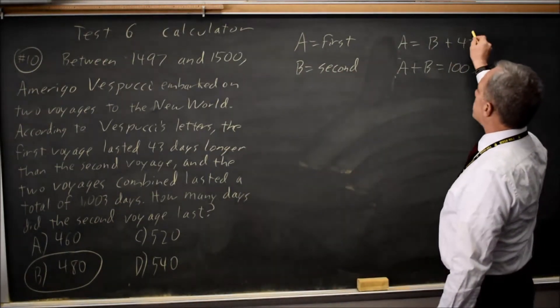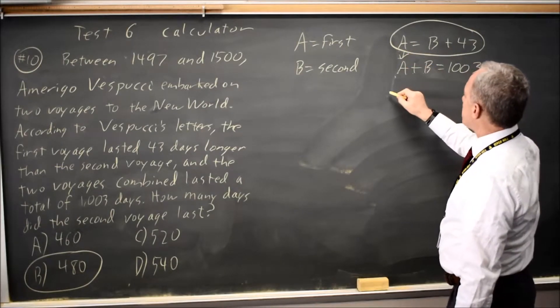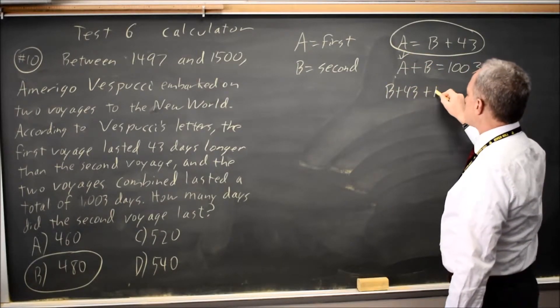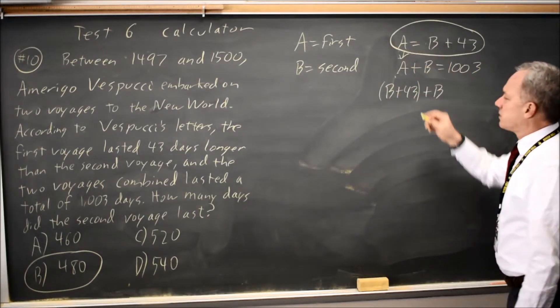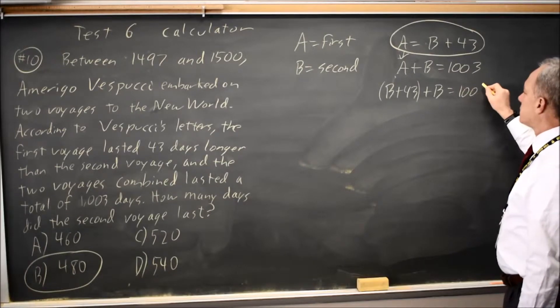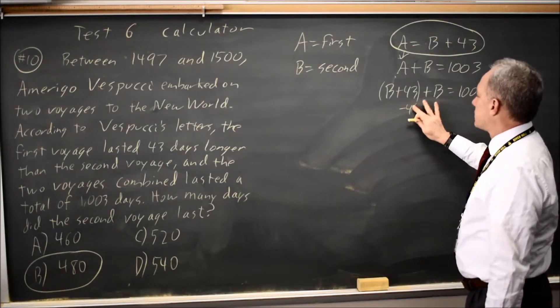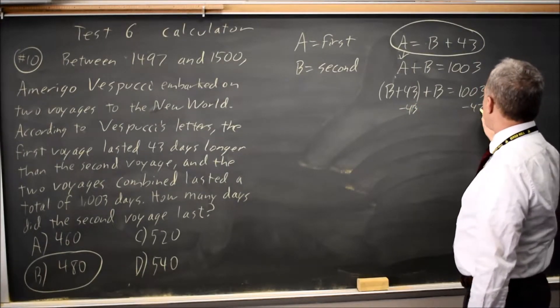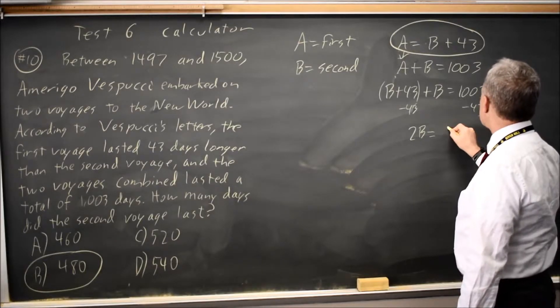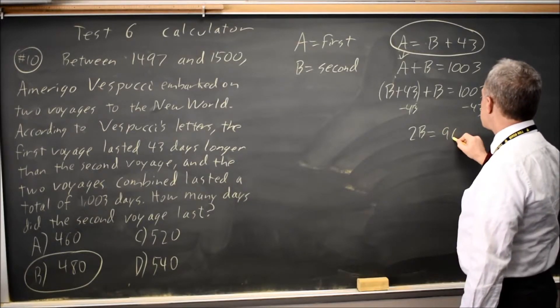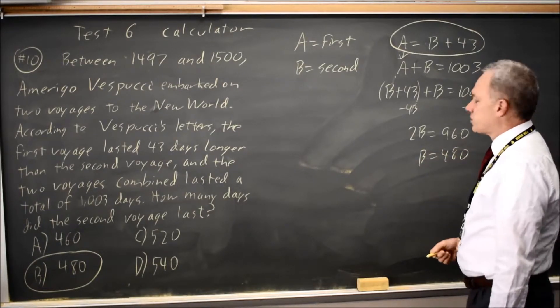Alternatively, this is solved for A. I'm looking for B. I can substitute in B plus 43 plus B, whereas B plus 43 is an expression equal to A equals 1,003. Subtract 43 from both sides, and that gives me 2B equals 960, or B equals 480 if I divide both sides by 2.